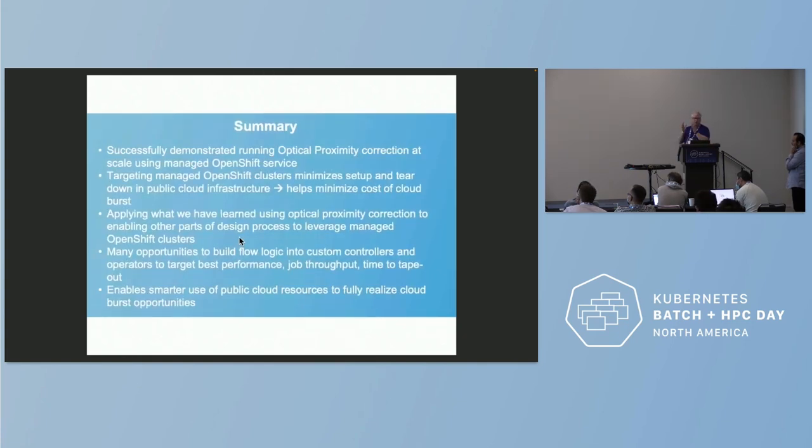So to summarize, we've successfully demonstrated running optical proximity correction at scale using a managed OpenShift service. We're targeting managed OpenShift services because it minimizes setup and teardown in public cloud infrastructure. And we're applying what we've learned using optical proximity correction to many other tools in the design chain, this design tool chain. So we can apply this to the tools that we're actually using to do register transistor logic, synthesis, place and route, timing, and closure, and performance. So we've got a lot of opportunities to build logic and custom controllers into this flow. You know, we view this as the first step.